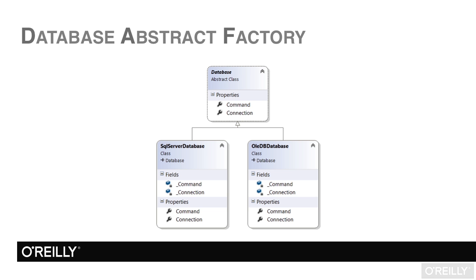Here's our class diagram. You can see that we have the abstract class Database with the properties Command and Connection. Then we have our SqlServerDatabase class, which inherits from that, and it has the Command and Connection properties as well as some internal private fields — underscore command and underscore connection — which are the underlying fields associated with those properties. We also have OleDbDatabase, which also inherits from our abstract database class and has the Command and Connection properties. So that's the idea behind a database abstract factory.